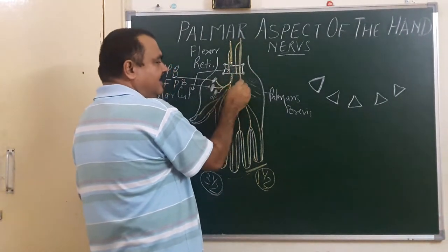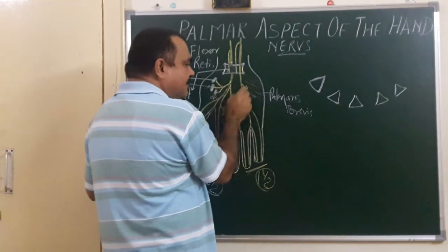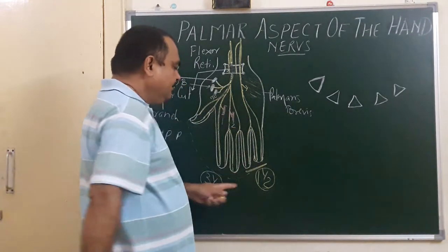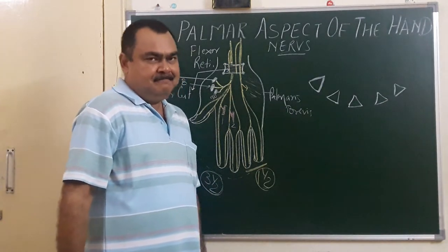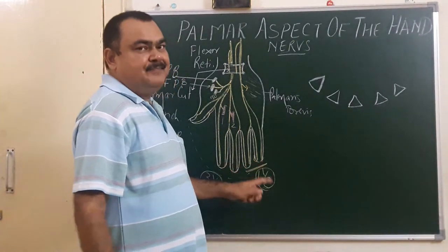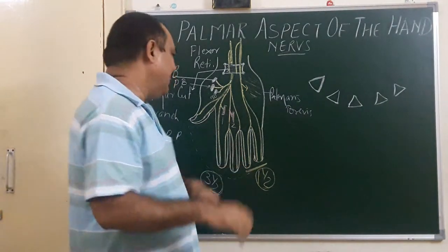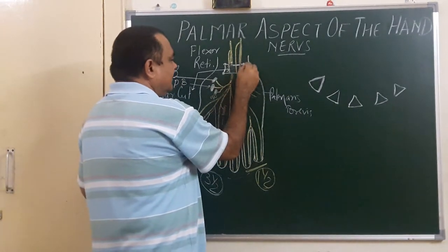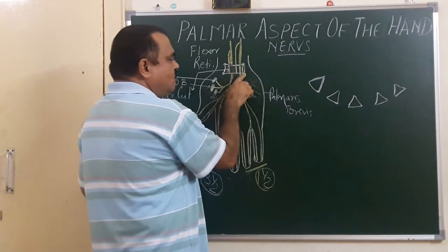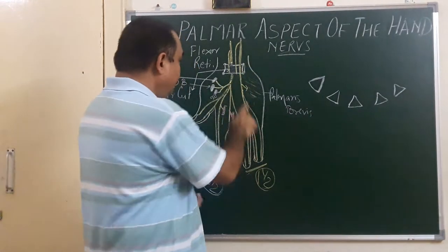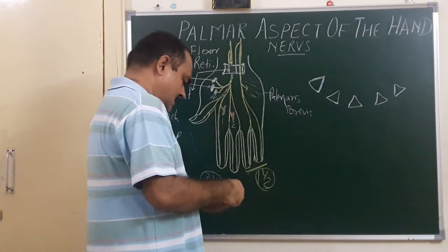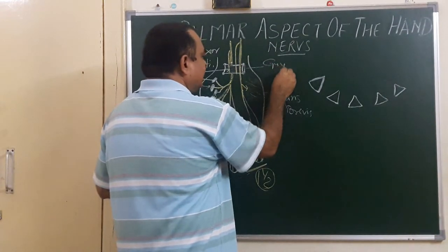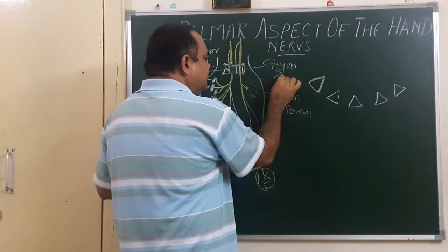So the ulnar nerve passes superficial to the flexor retinaculum, gives a superficial branch with supply to palmaris brevis and palmar digital branches to one and a half digits. There is also a structure called the pisohamate ligament. This pisohamate ligament forms Guyon's canal.